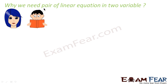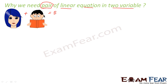Let's start. Why do we need pair of linear equations in two variables? Focus on the term: pair means two equations, linear, equation, and two variables. Here's a scenario: in a class, the number of boys plus number of girls is five, and the number of girls is more than number of boys by one. We have to find how many boys and how many girls. So we form a pair of linear equations: boy plus girl is equal to five.